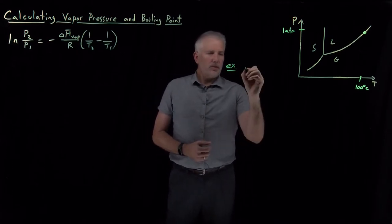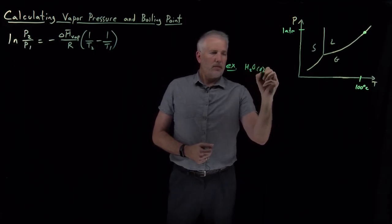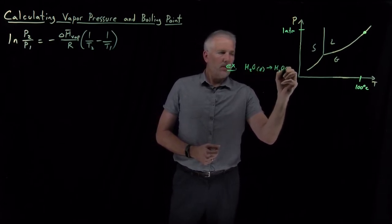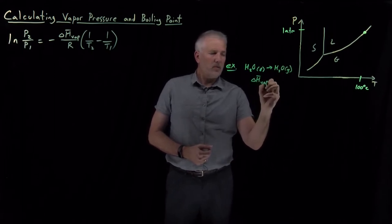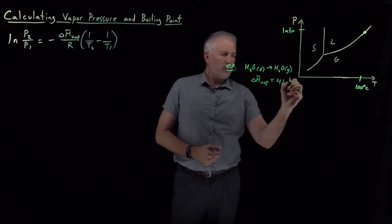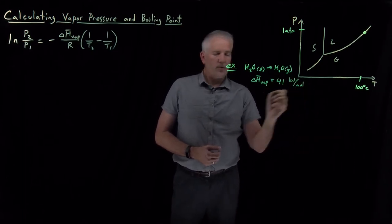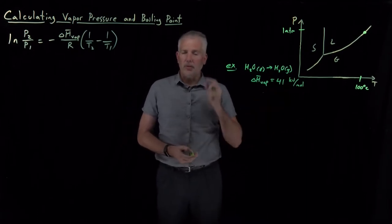Let's suppose, again sticking with water, we're talking about boiling of water, vaporization of water. I'll tell you that the heat of vaporization of water near its normal boiling point is about 41 kilojoules per mole. It costs me 41 kilojoules of enthalpy to vaporize one mole of water at the normal boiling point.